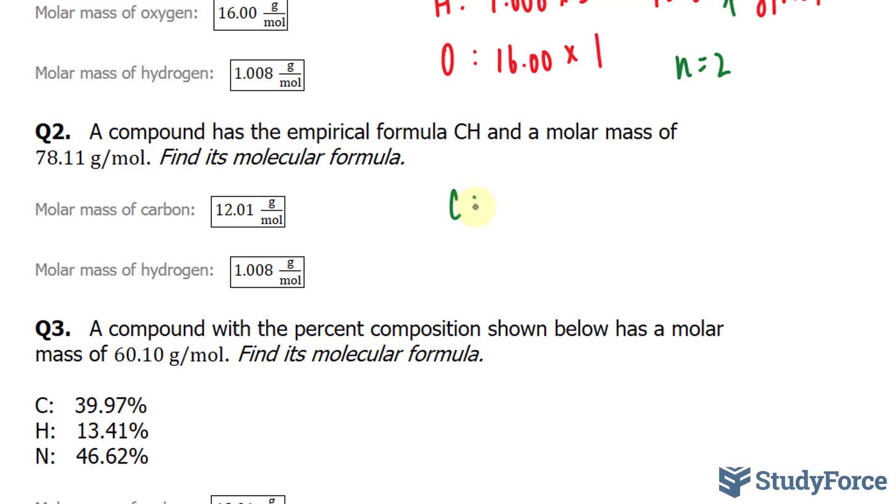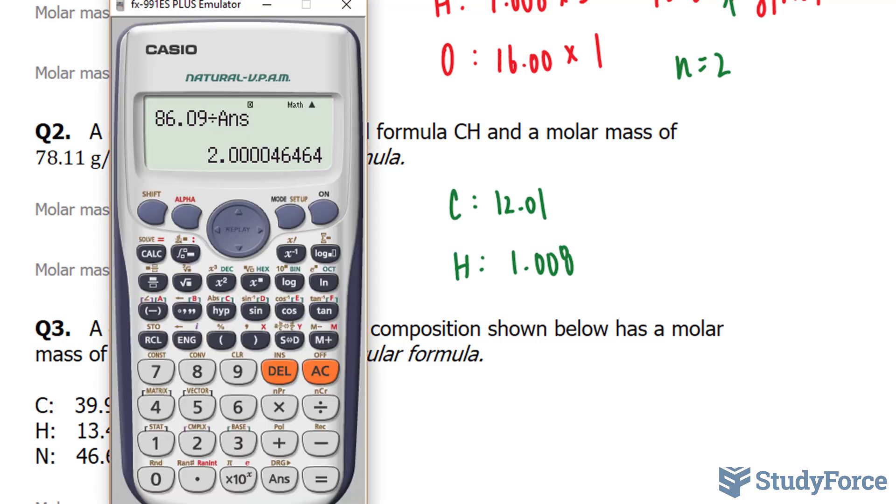We have carbon, once again, at 12.01, and hydrogen at 1.008. Notice that I'm not multiplying these molar masses by anything because here C is 1 and H is 1. All we have to do here is add these up.